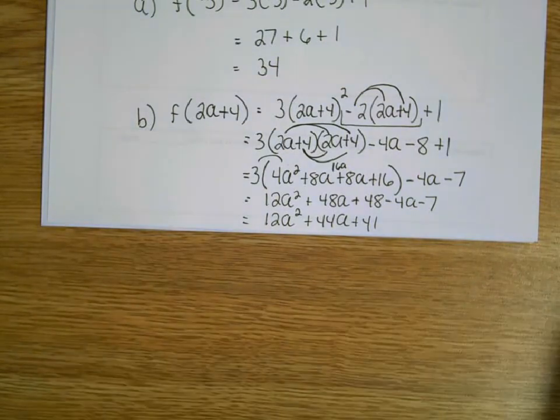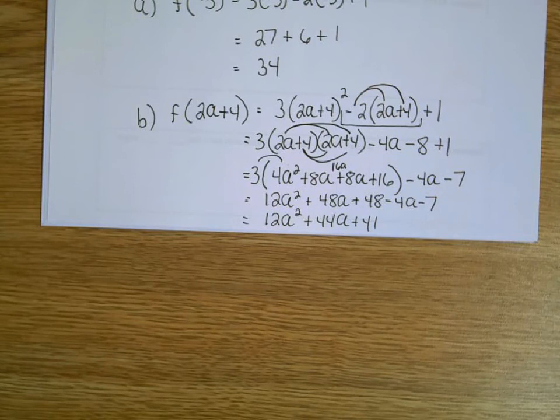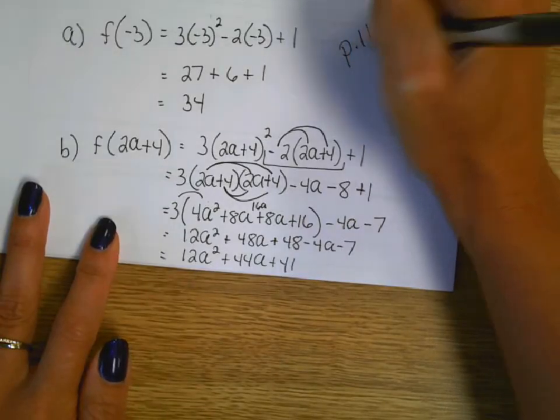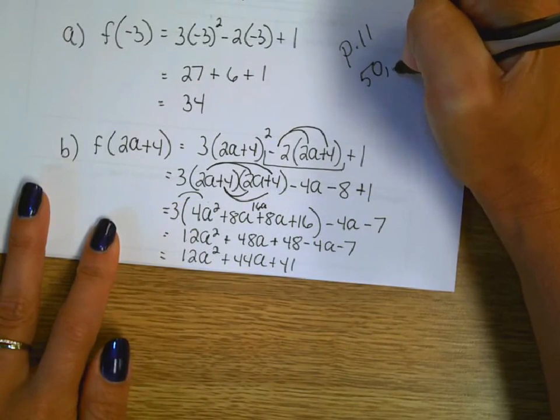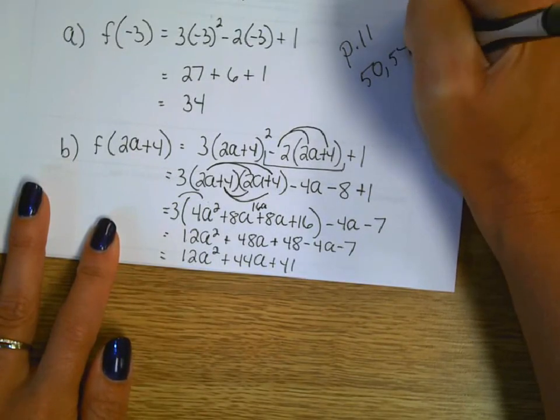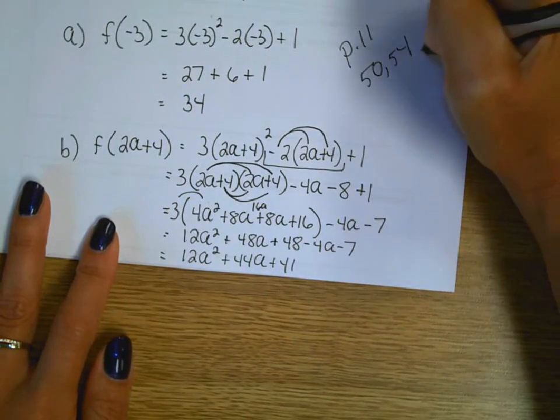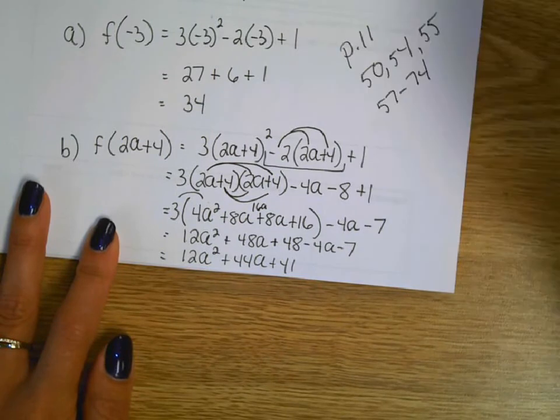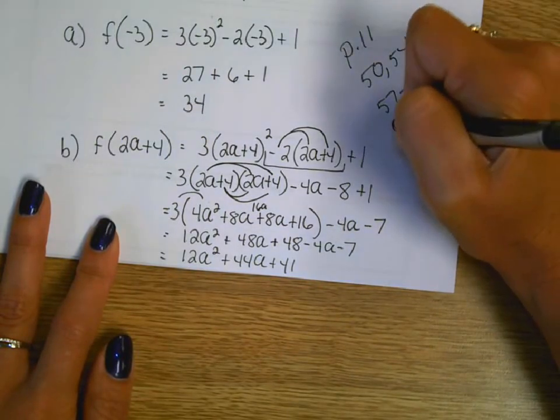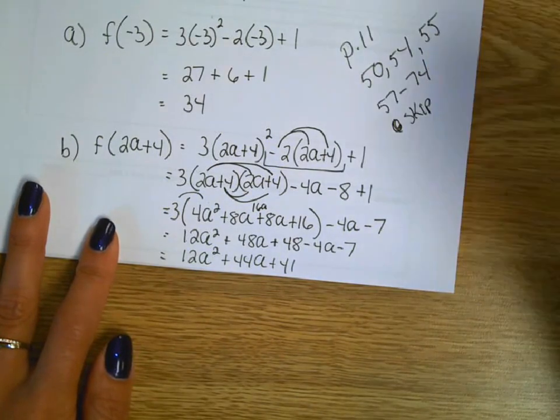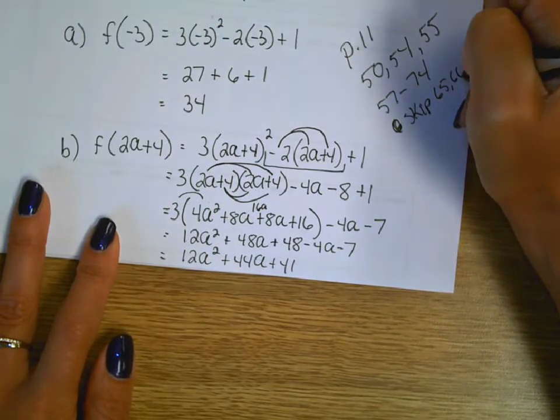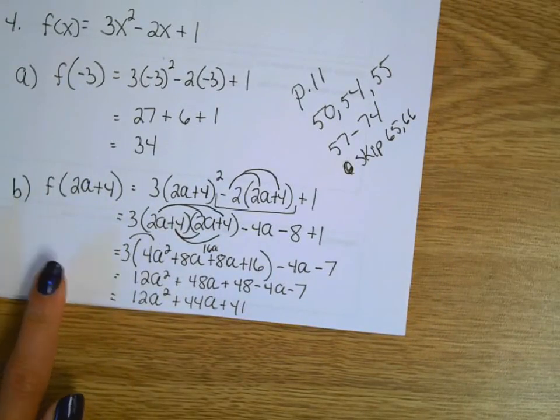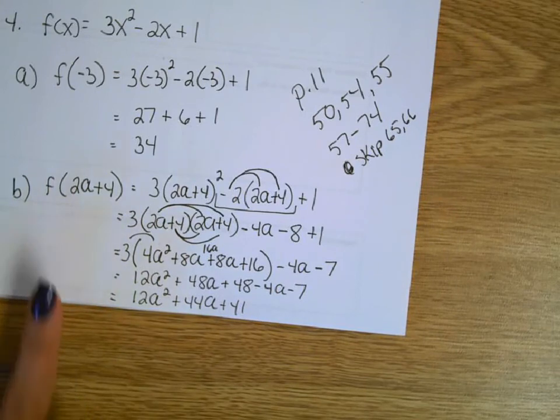Okay. So I got to go back and pick up the midpoint stuff that I didn't get to yesterday. Which was stopped at 42. So we're going to pick up page 11. 50, 52, 54, 55, 57 to 74, skipping 65 and 66.